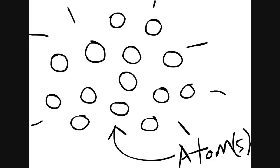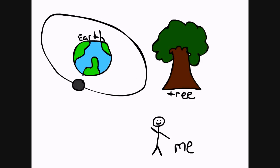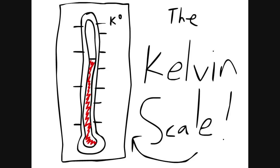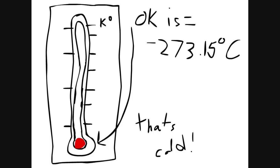There are these things called atoms. They make up everything in the universe. Sir William Thompson Kelvin invented the Kelvin scale. Zero K is known as absolute zero, or negative 273.15 degrees Celsius.